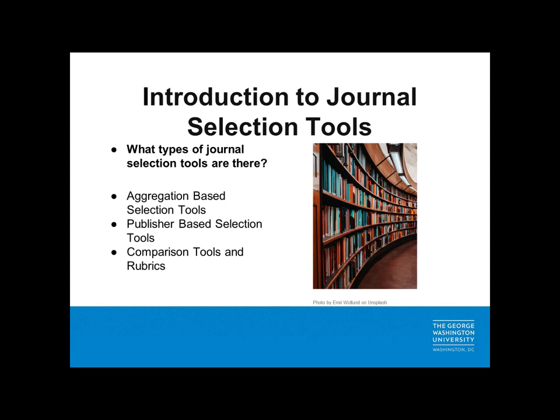So what exactly is a journal selection tool? A journal selection tool is a resource that provides information about multiple journals. Often these resources include information about metrics such as a journal impact factor. There are three main types: first, aggregation-based tools, which help you find journals from a variety of publishers; next, publisher-based tools, which help you select a journal from a single publisher such as Elsevier or Springer Nature; and lastly, comparison tools and rubrics, which are designed specifically to allow you to compare publications, although some have search features similar to an aggregation-based selection tool.